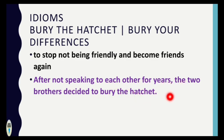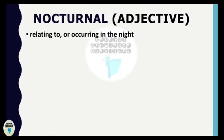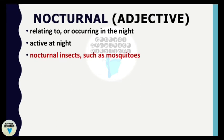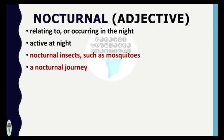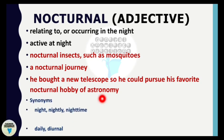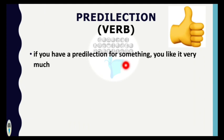The next word is 'nocturnal.' Nocturnal is an adjective meaning relating to, occurring in, or active at night — such as nocturnal insects like mosquitoes, or a nocturnal journey. For example: 'He bought a new telescope so he could pursue his favorite nocturnal hobby of astronomy.' Synonyms of nocturnal are: night, nightly, or nighttime. Its antonyms are: daily or diurnal.